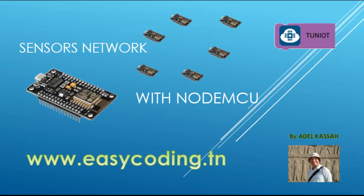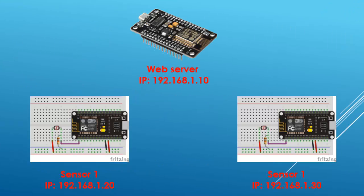Today, we will see how to make a web server to monitor a network of sensors. In my case, the web server will run on a NodeMCU board, and I have two photoresistors, each one connected to another MCU. You can apply this example to any kind of sensor, and for a bigger number of sensors.